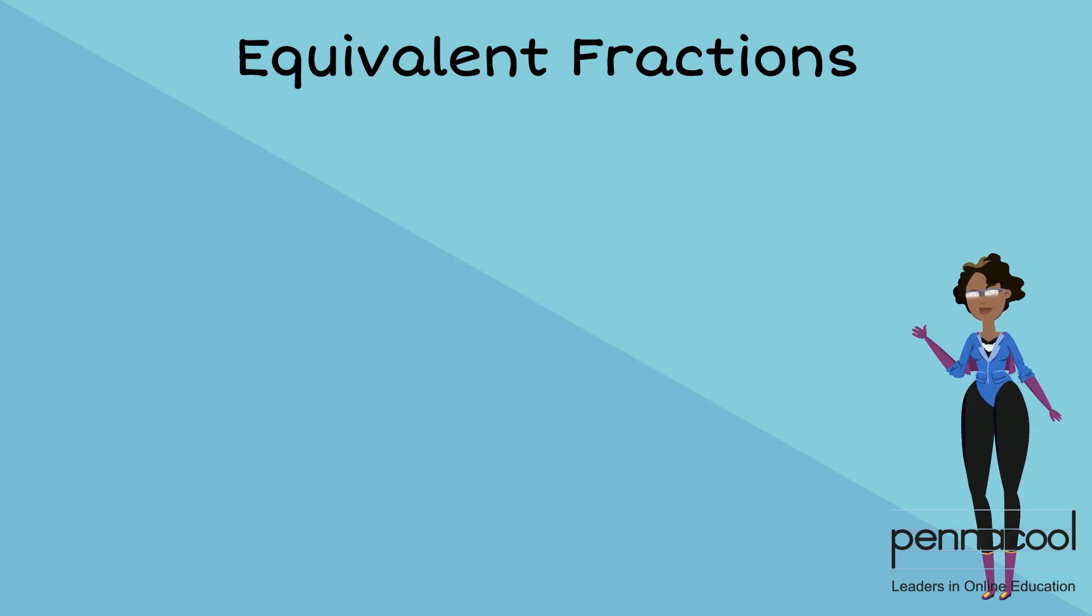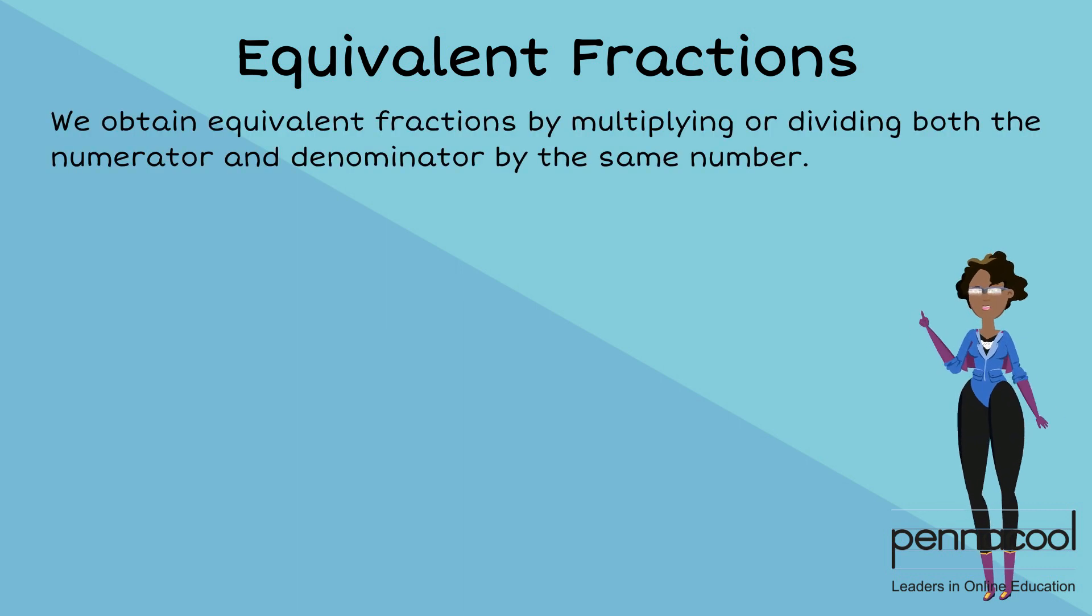Equivalent fractions can be bigger or smaller. We obtain equivalent fractions by either multiplying or dividing both the numerator and denominator by the same number.